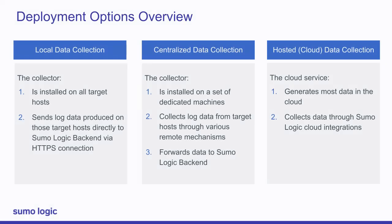There are three types of data collections: local, hosted or cloud, and centralized. Often, organizations end up with a mix of local and centralized data collection. The local method collects all data locally from each individual system, and the centralized method uses installed collectors with remote file sources, or a local file source like syslog, to collect data in a centralized location before sending it to Sumo Logic.